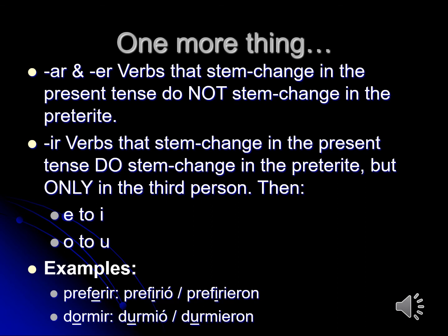One more thing: AR and ER verbs that stem change in the present tense do not stem change in the preterite tense. IR verbs that stem change in the present tense do stem change in the preterite, but there's a difference — they only stem change in the third person, and then the E changes to I or the O changes to U. For example, preferir becomes prefirió or prefirieron; dormir becomes durmió or durmieron. Thank you.